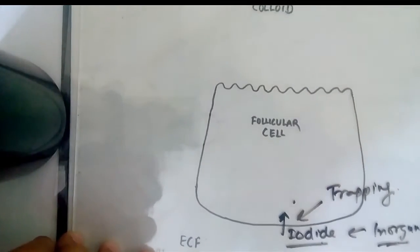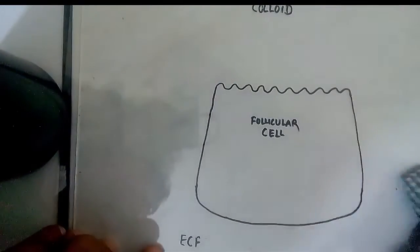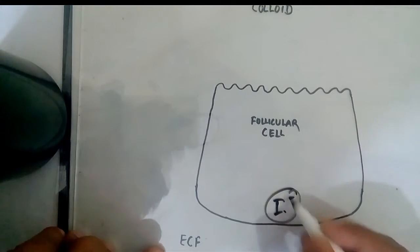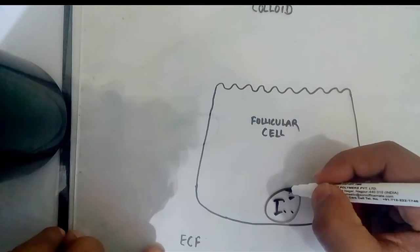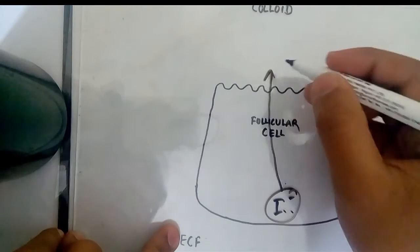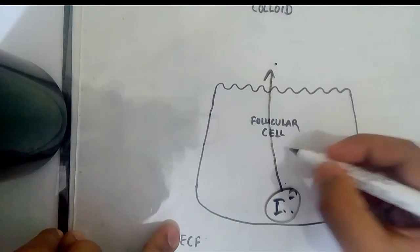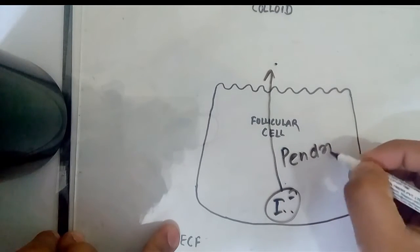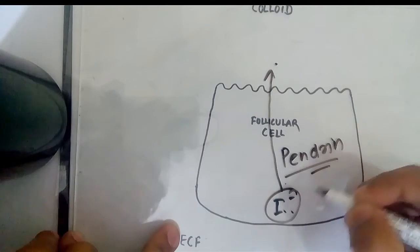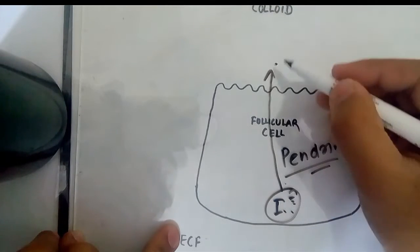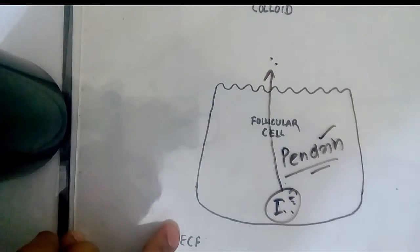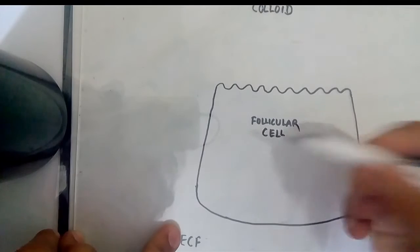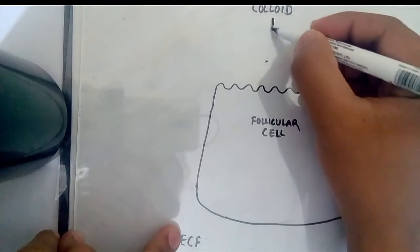Once the iodine is inside the follicular cell it has to go to the colloid. There is a transporter known as pendrin which transports the iodide to the colloid.